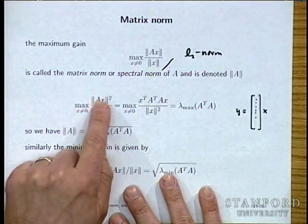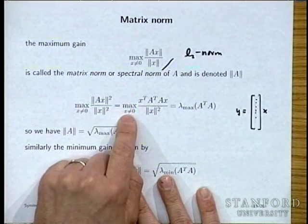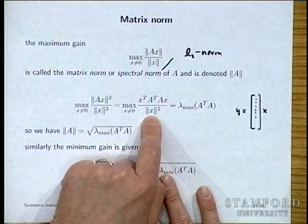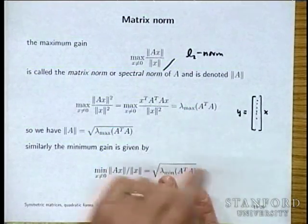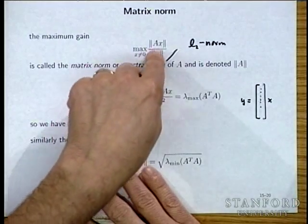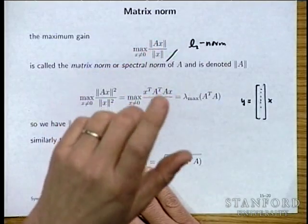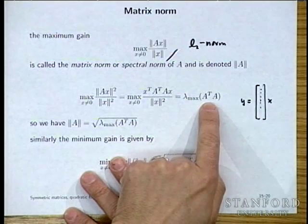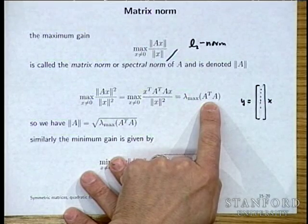To maximize norm(Ax)^2 / norm(x)^2, rewrite as X transpose (A^T A) X / (X transpose X). We already know this maximum equals the maximum eigenvalue of A^T A. Note that A need not be square or symmetric, but A^T A is always square, symmetric, and positive semi-definite — since X^T (A^T A) X equals norm(Ax)^2 which is always non-negative. The matrix norm of A is the square root of the maximum eigenvalue of A^T A, also called the maximum singular value.